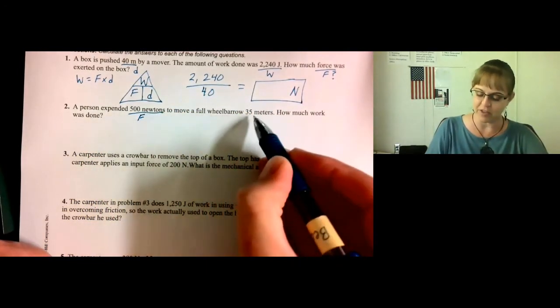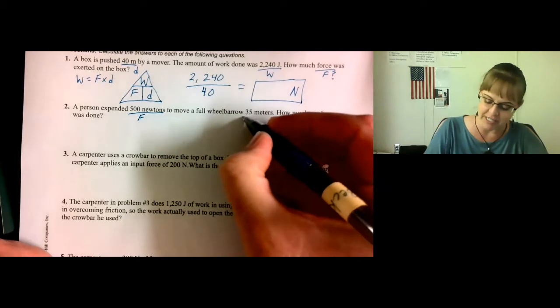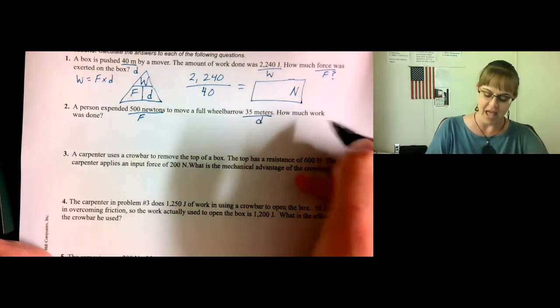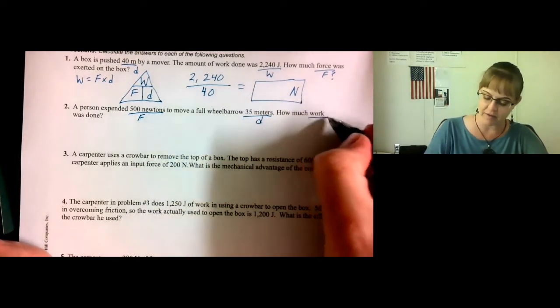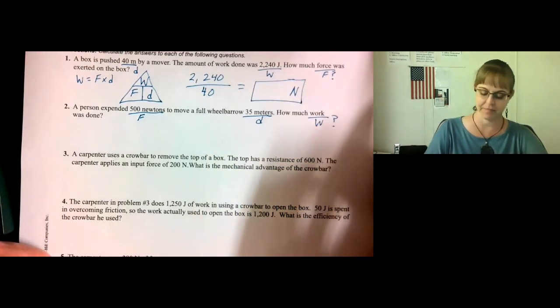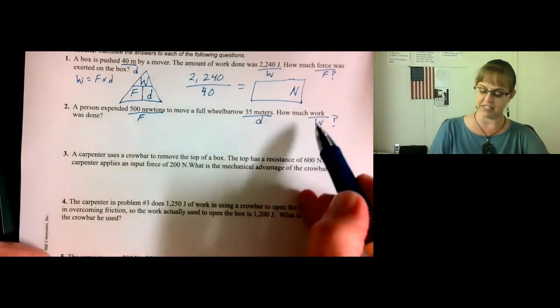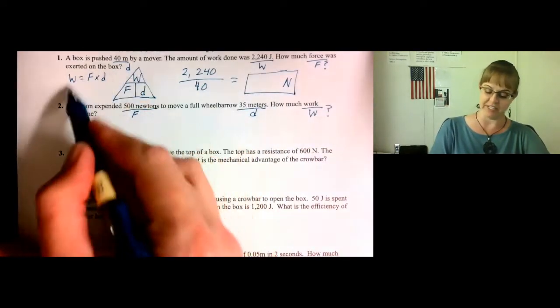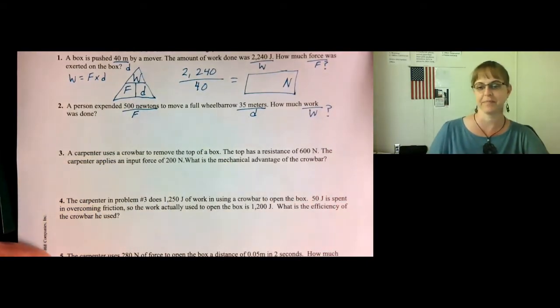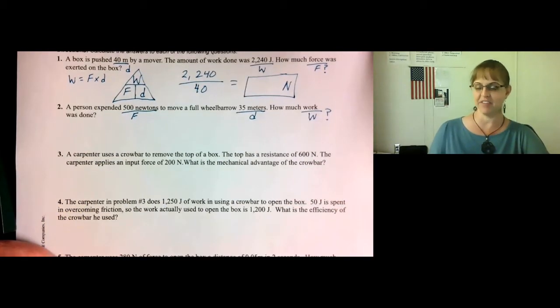To move a full wheelbarrow 35 meters. Meters, distance. How much work was done? Find the work. So once again, we need a formula with force, distance, and work, which is this same formula right here. You go ahead and finish number two.